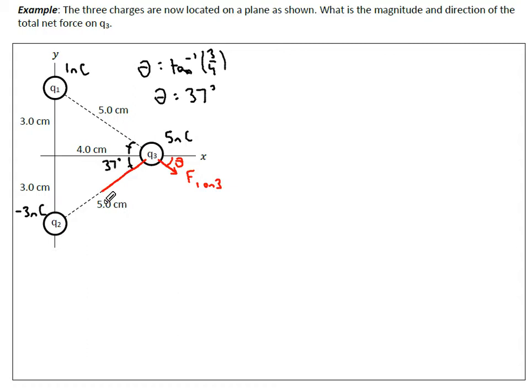The reason I drew this vector to be larger is because Q2 is just simply a larger magnitude in charge compared to Q1. So this is going to be F2 on 3.